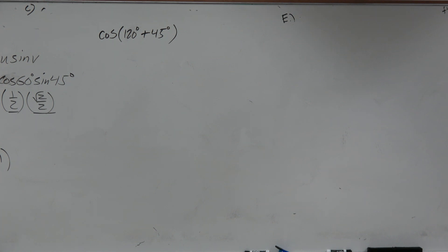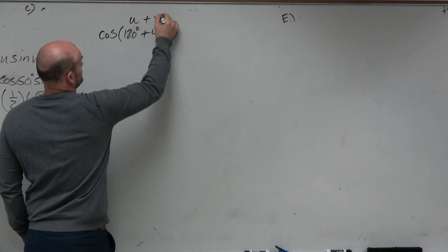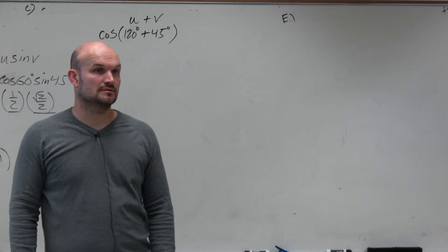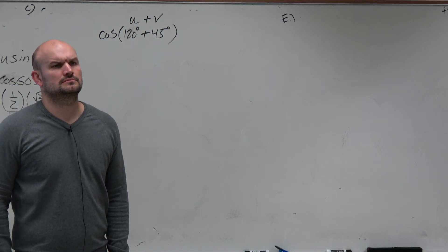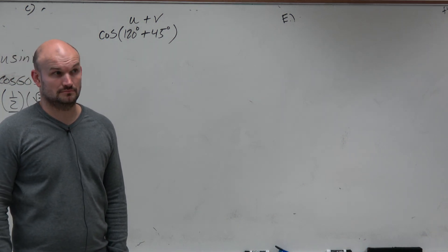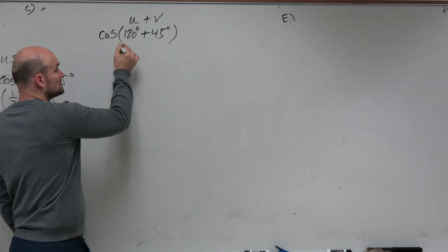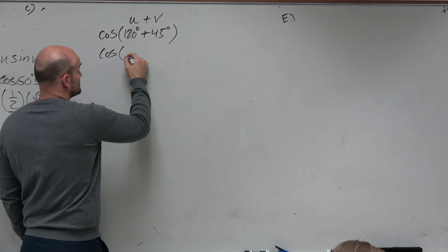So I'm going to do this. So again, we know we're adding two angles. So therefore, since I'm adding two angles for cosine, let's just write out the formula that is given to us.